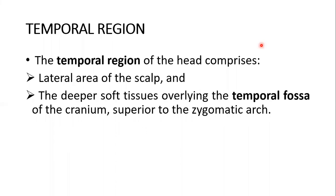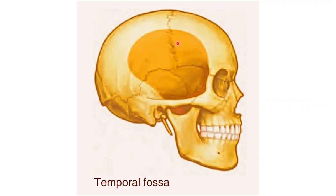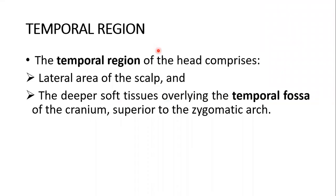The temporal region is the lateral area of the scalp. This is the temporal fossa, and this all is the temporal region over here. We remember from my discussion on the scalp that the extent of the scalp was from the supraorbital margin to the superior nuchal lines, and inferiorly to the zygomatic arch. So this temporal region and temporal fossa also overlaps with the scalp.